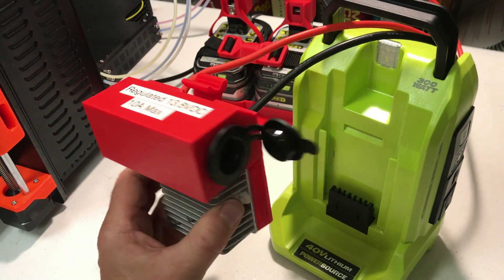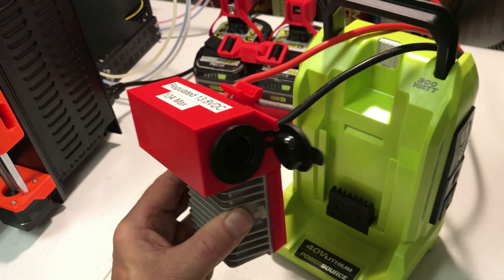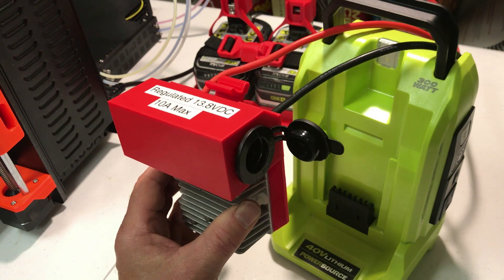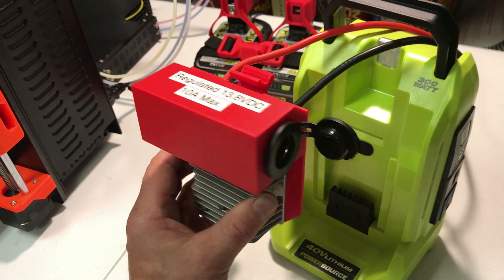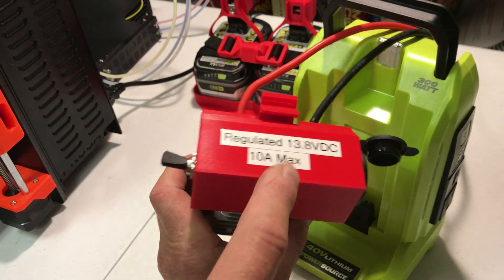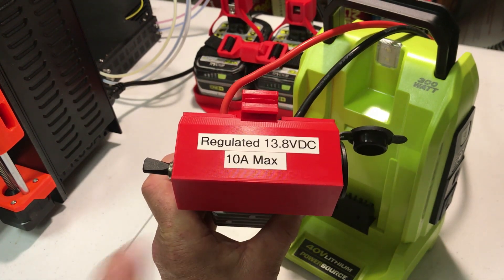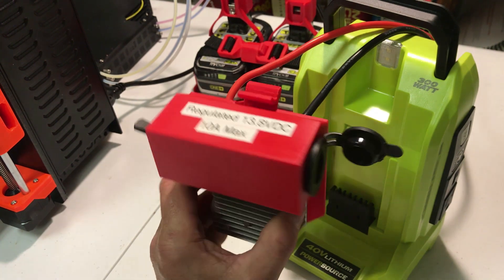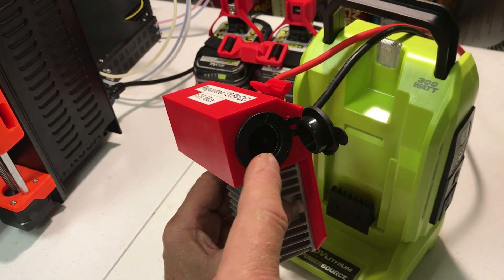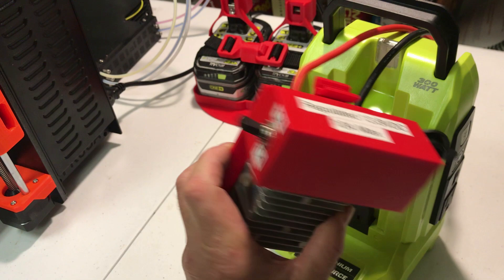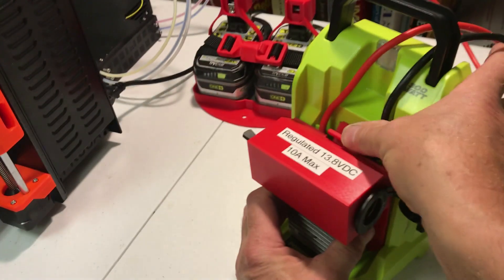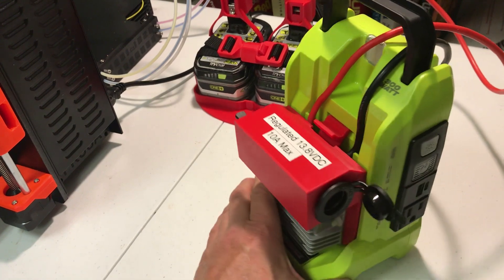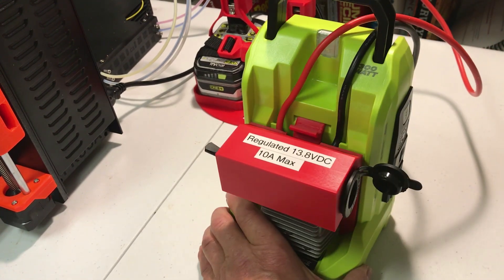I'm pretty happy about how this adapter came out. It's meant to slide into the 40 volt Ryobi inverter. It has a 10 amp max 13.8 volt DC cigarette light socket. It has an on and off switch and this slides right into where the battery would normally go in the inverter.